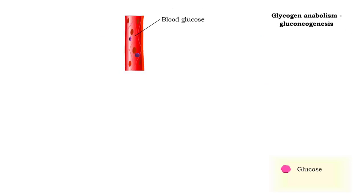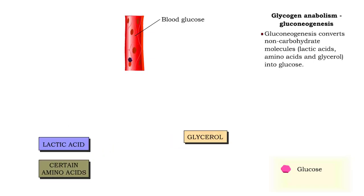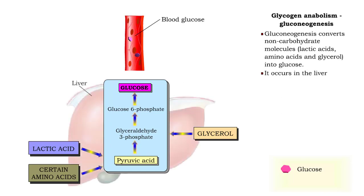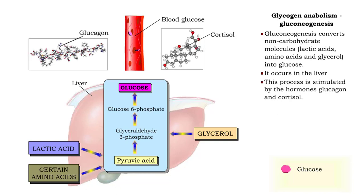Non-carbohydrate molecules — lactic acid, amino acids, and glycerol — can be converted into glucose in the process of gluconeogenesis. Like glycogenolysis, gluconeogenesis also occurs in the liver. The hormones glucagon and cortisol stimulate gluconeogenesis. As the glucose is synthesized, blood glucose will increase.